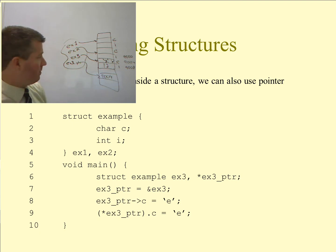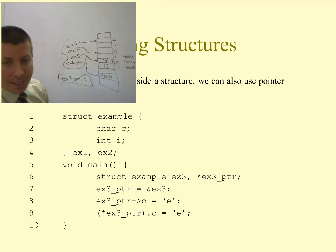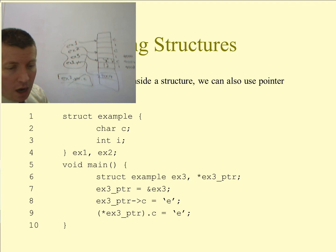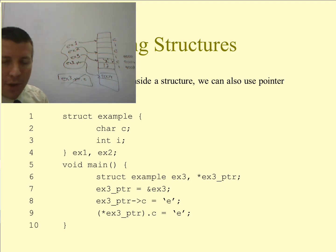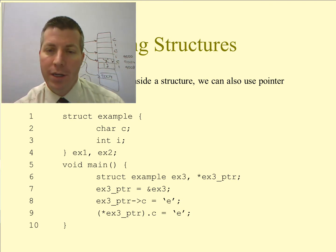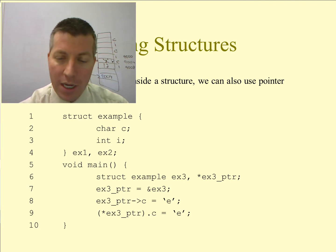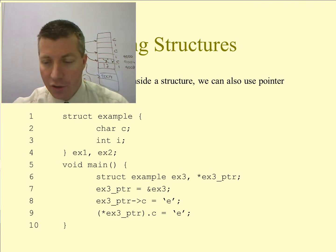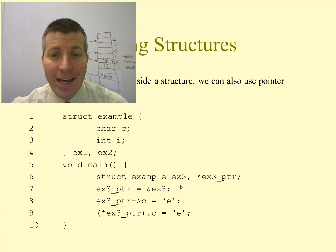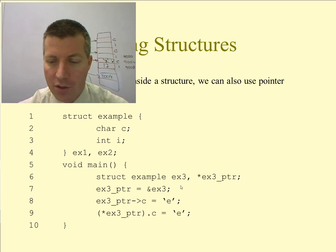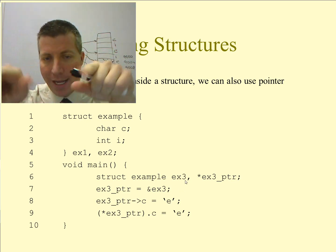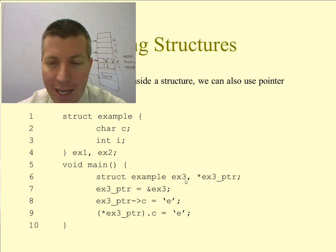What you need to be careful of is not doing something like ex3_pointer.c — this will not work because ex3_pointer is a pointer, not an instance of the structure, so we don't have a variable c on it. You must dereference ex3_pointer or use arrow notation to access it. We can also create an array of structures. Instead of just struct example ex3, we can say struct example ex3 with brackets and whatever number we want — you'll see that in the program we're going to write.